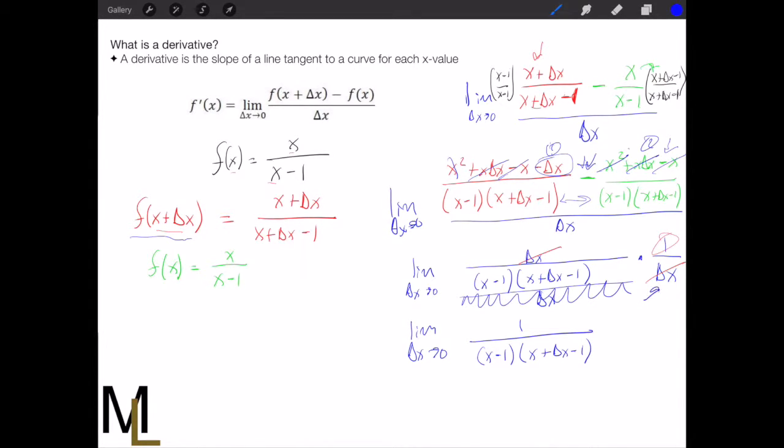And so by getting rid of this delta x on bottom, we can actually take the limit now because the limit of this new function won't go to infinity, because anything you divide by zero goes to infinity. So what gets left over after we take the limit? Well, this guy goes to zero per this limit.